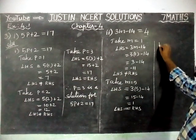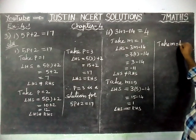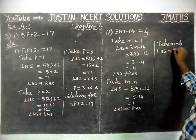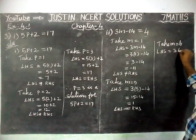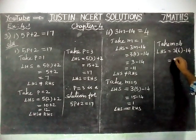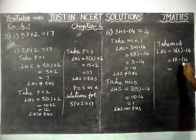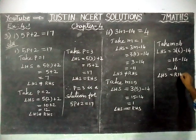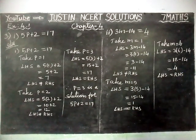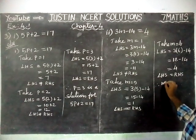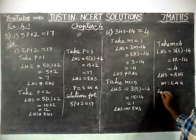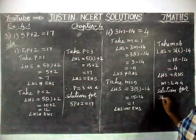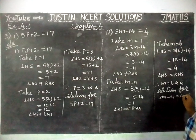Next, we are going to take M is equal to 6, because we tried with 5, so we take the next number. Left hand side, LHS is equal to 3 into 6 minus 14 is equal to 18 minus 14. Signs are different, so we find the difference: difference is 4. Here, LHS is equal to RHS, because we need 4 on the right hand side and we got 4 on the left hand side. Therefore, M equal to 6 is a solution for 3M minus 14 is equal to 4.